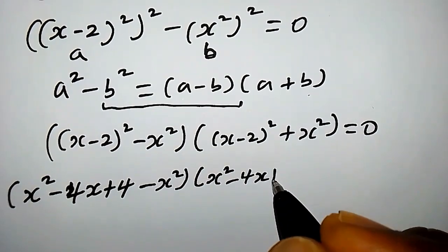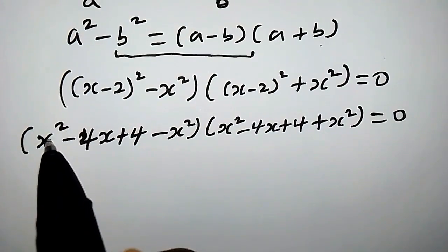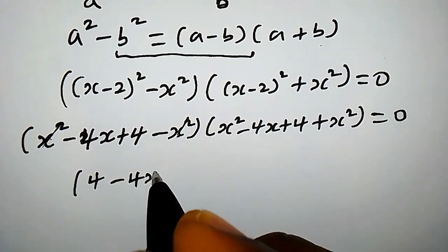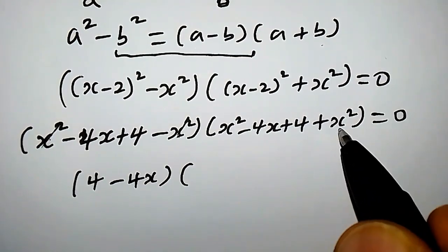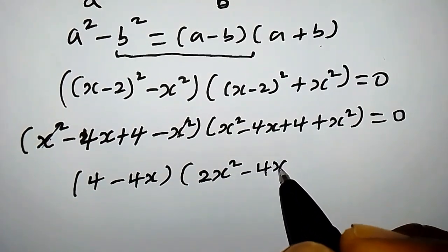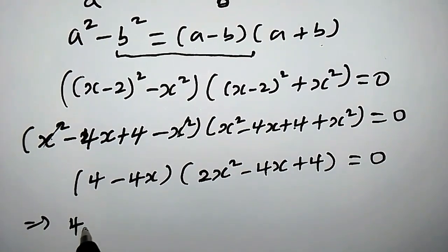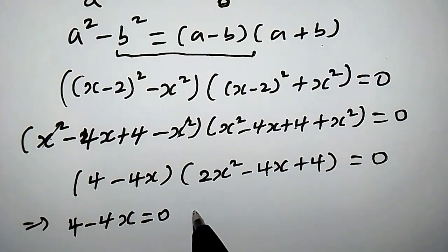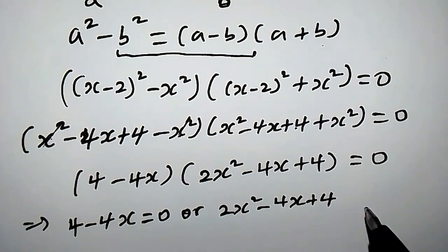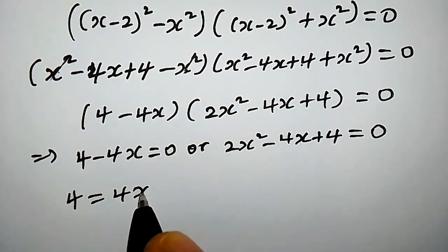After canceling, x squared minus x squared cancels, and we get: 4 minus 4x equals 0, and also 2x squared minus 4x plus 4 equals 0. So the first equation becomes 4 equals 4x.